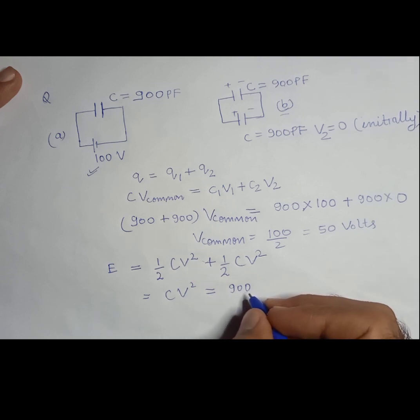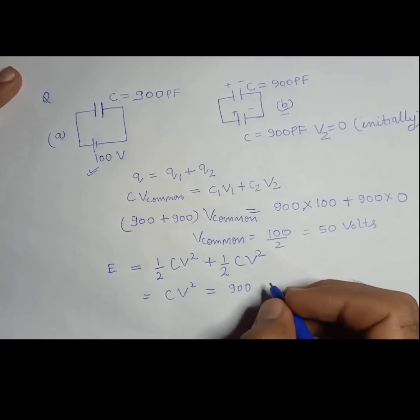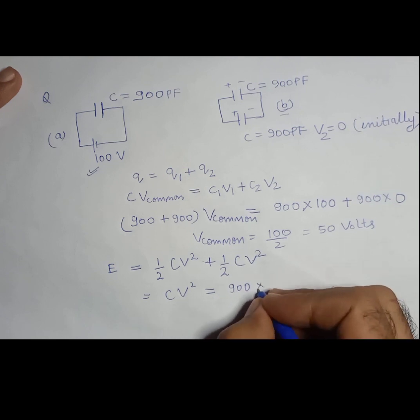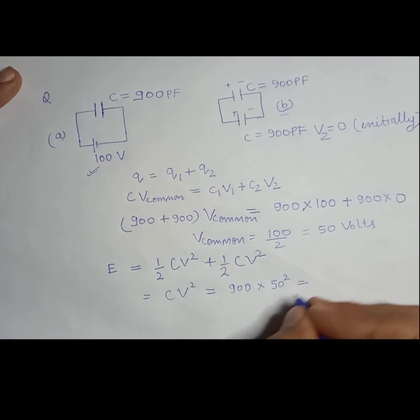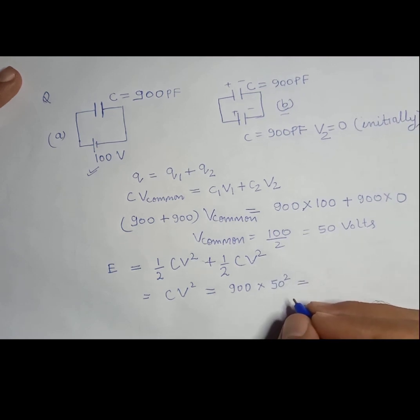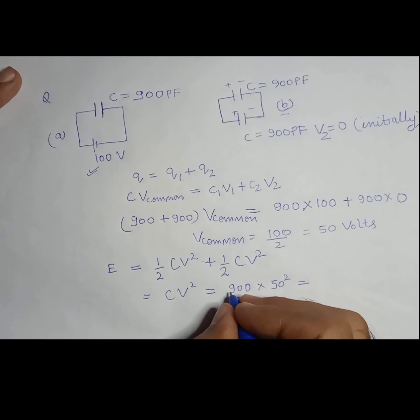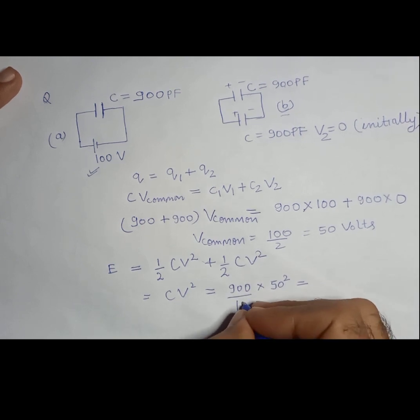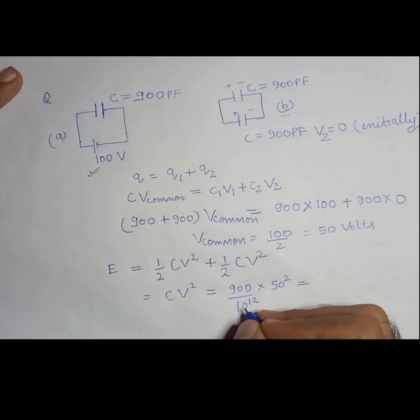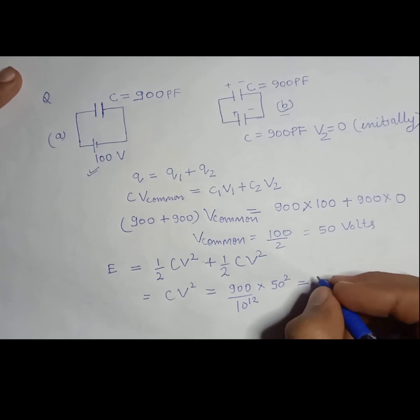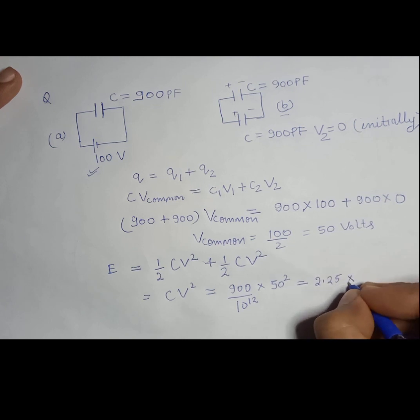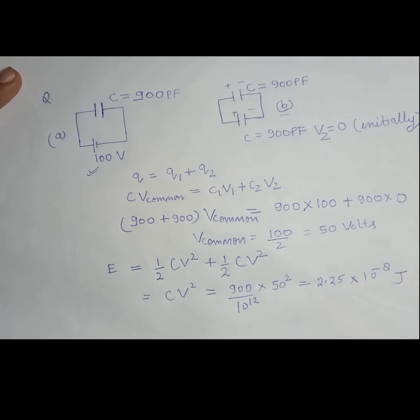So in the system B, after a while, this would be the common potential V. And electrostatic potential energy, that would be 900 into V square. So how much would it be? This 900 is in picofarad, right? So you can divide it by 10 to the power 12.